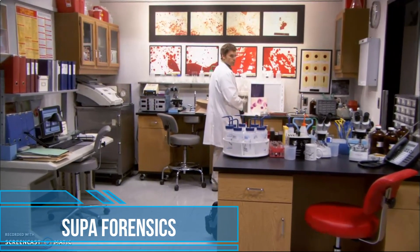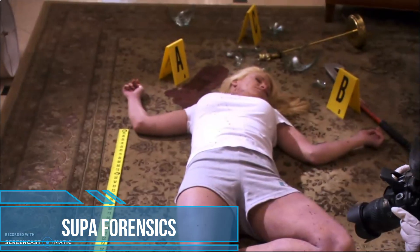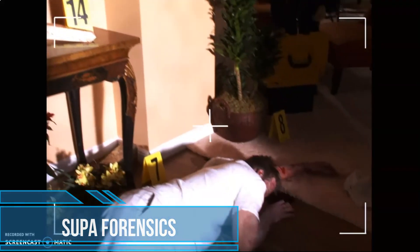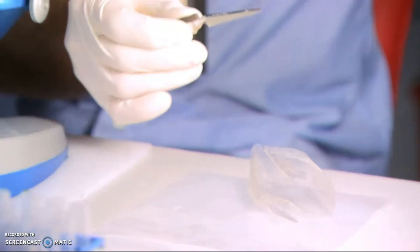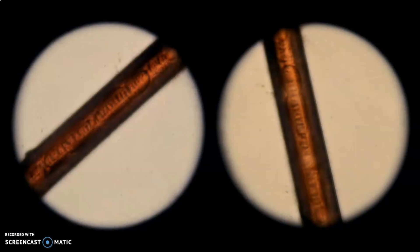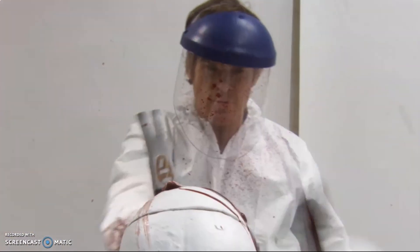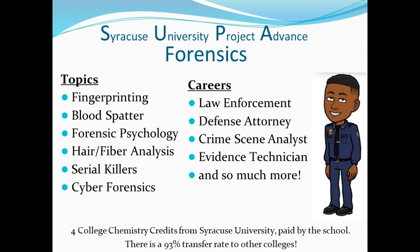Are you interested in solving crimes? Do you wonder how the experts do it on shows like CSI? This next class will cover all branches of forensics, such as fingerprinting, blood spatter, forensic psychology, hair and fiber analysis, profiling serial killers, and cyber forensics. Supa Forensics is offered through Syracuse University and offers exciting opportunities to study crime scene evidence and understand how this evidence is used in the court of law. Students who complete this course will receive four college chemistry credits from Syracuse University, paid by the school. Not planning to go to Syracuse? Not a problem — there is a 93% transfer rate to other colleges.